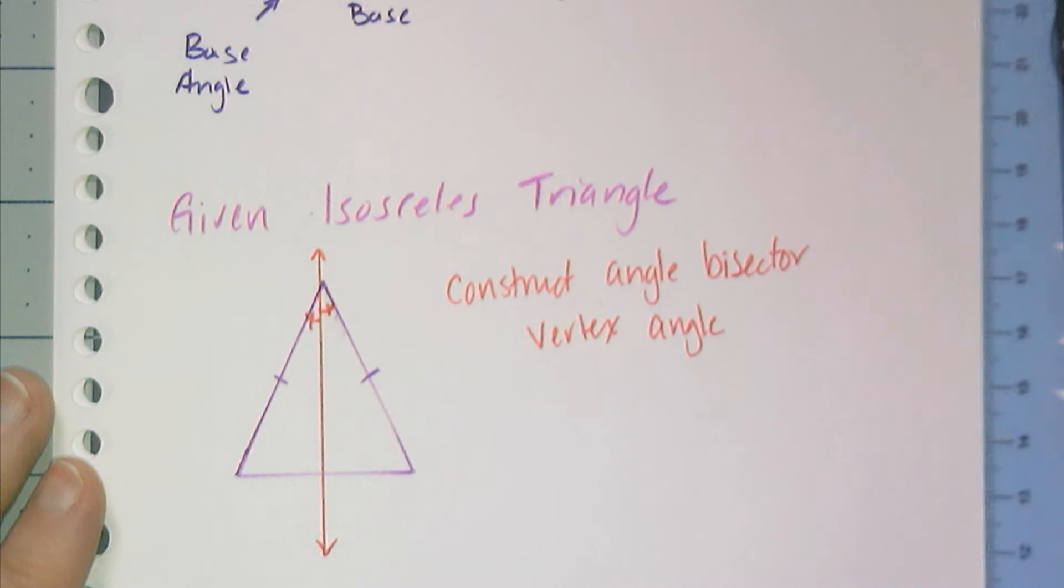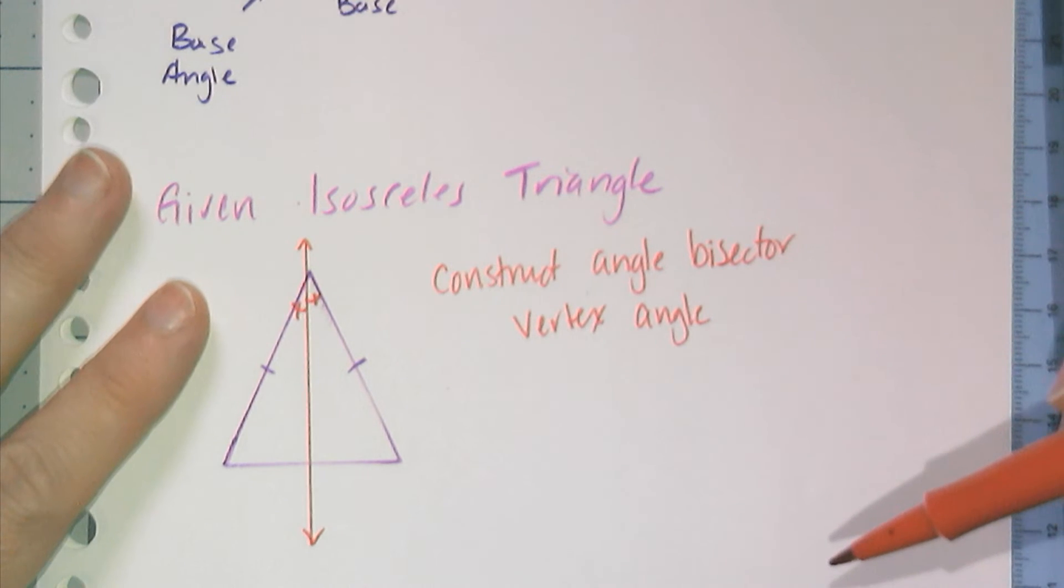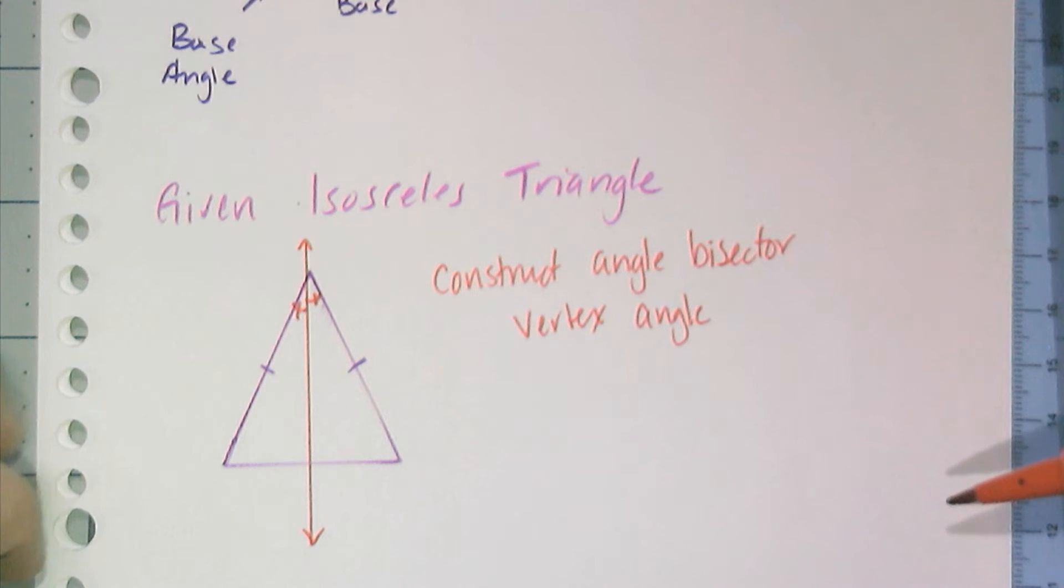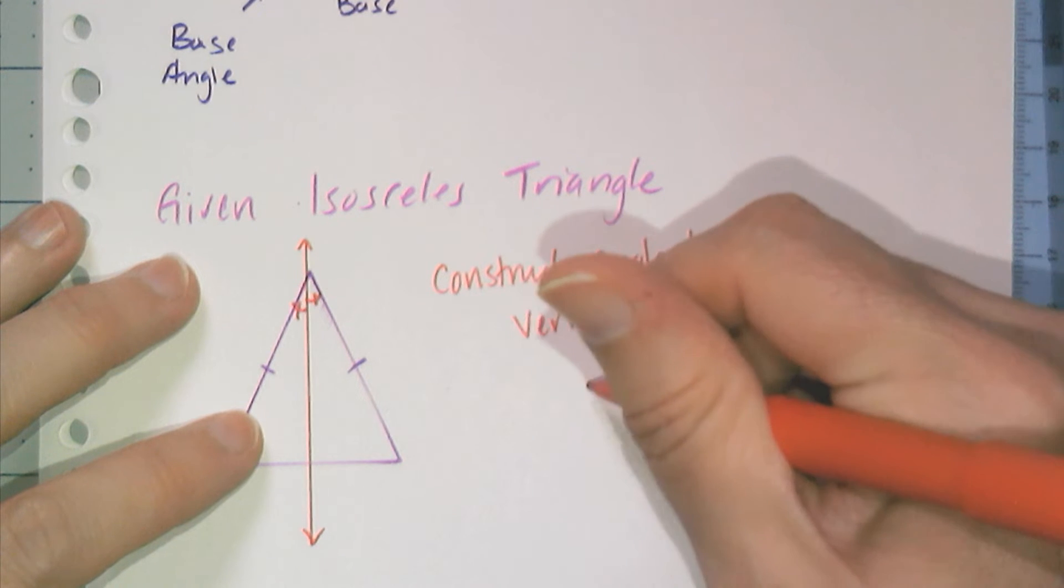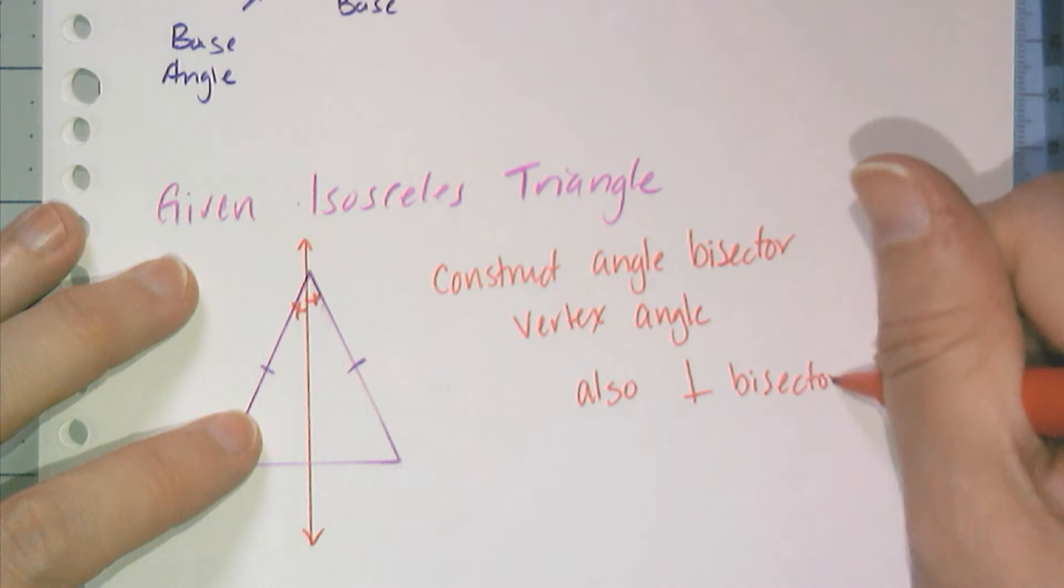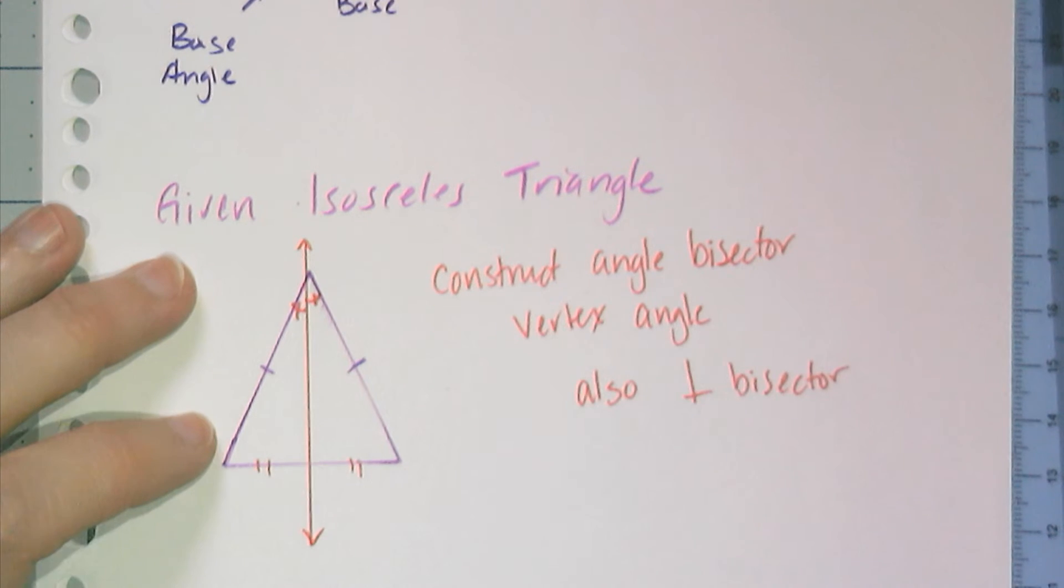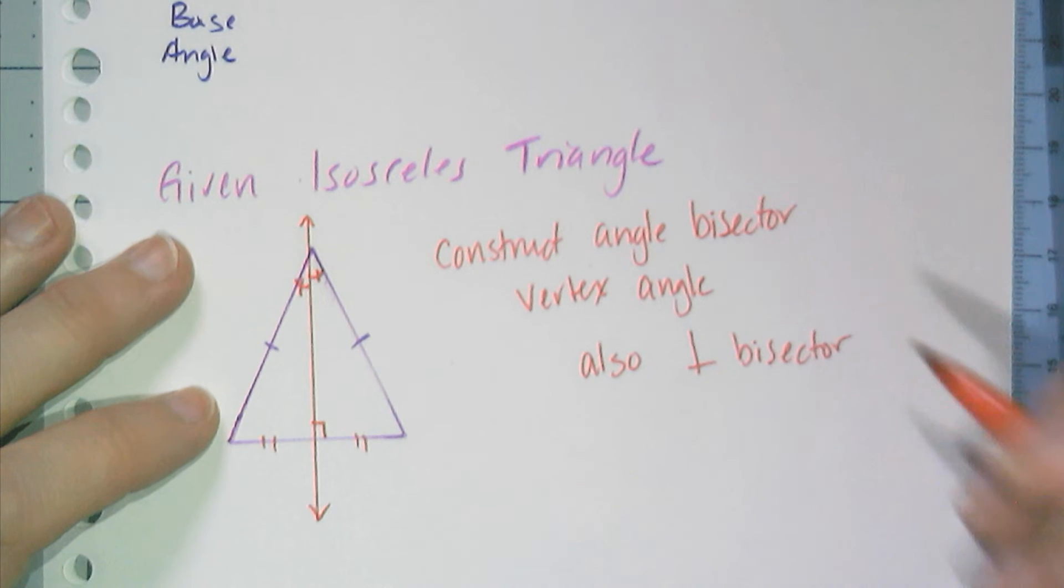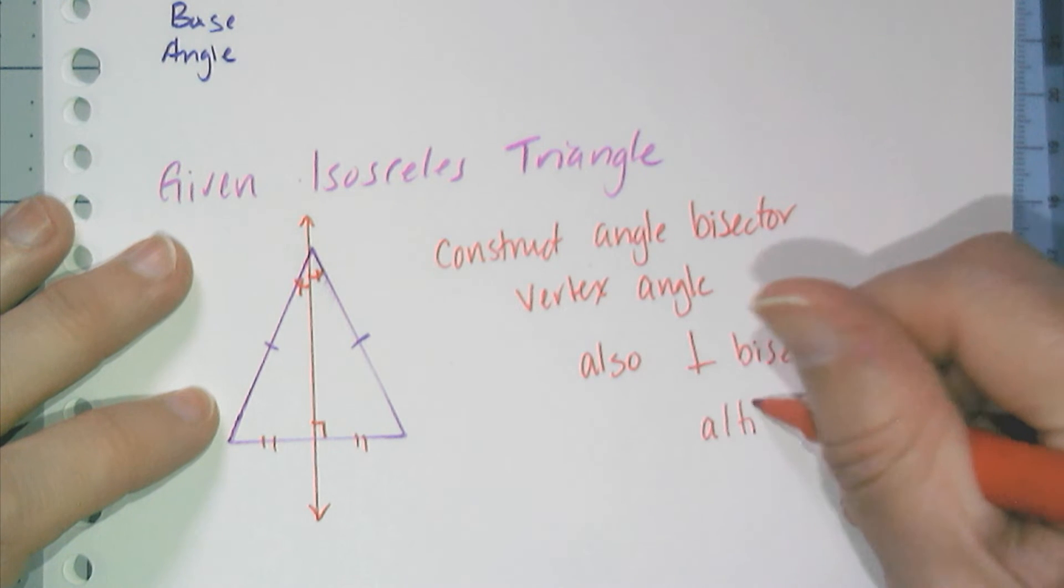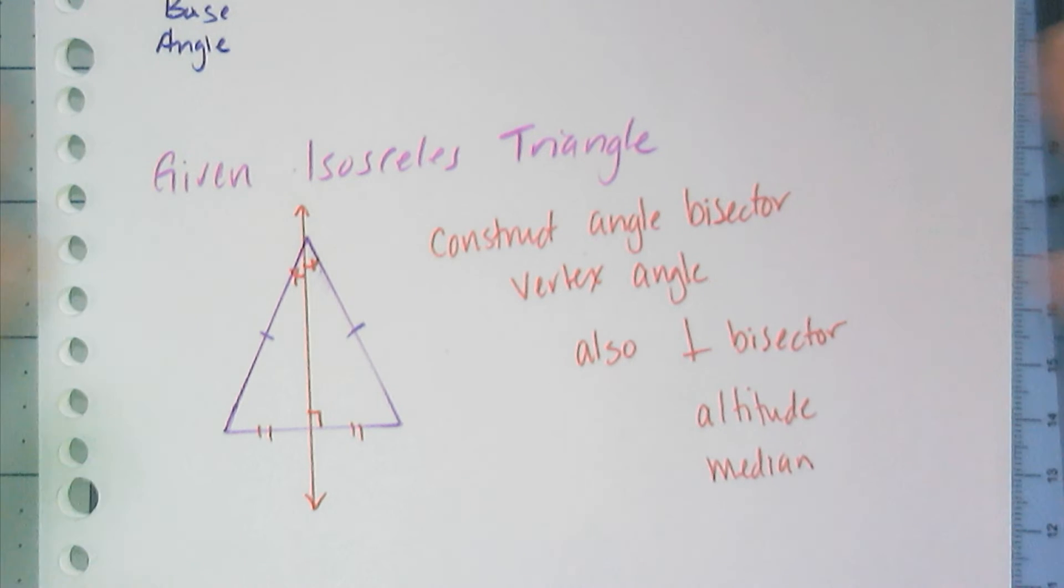Now if you remember what's special about isosceles triangles, an isosceles triangle, its angle bisector at the vertex angle is not just an angle bisector. It's also a perpendicular bisector. So that means it's going to chop that base in half and form a right angle. It's also the altitude, and it's also the median. It's all four.